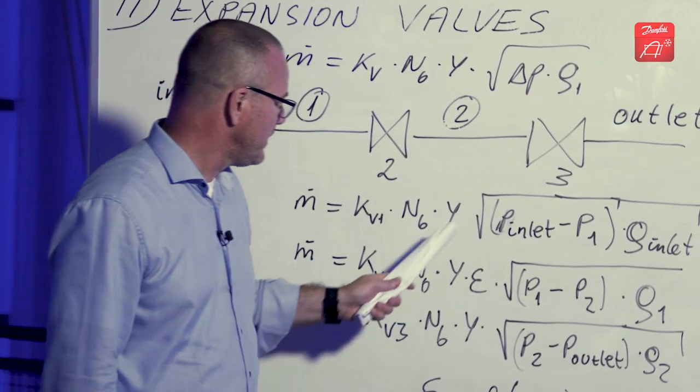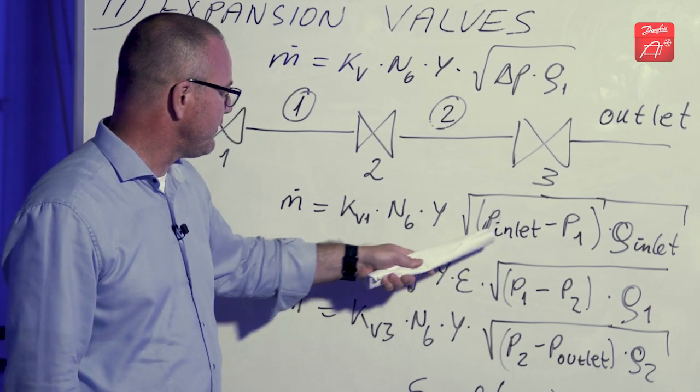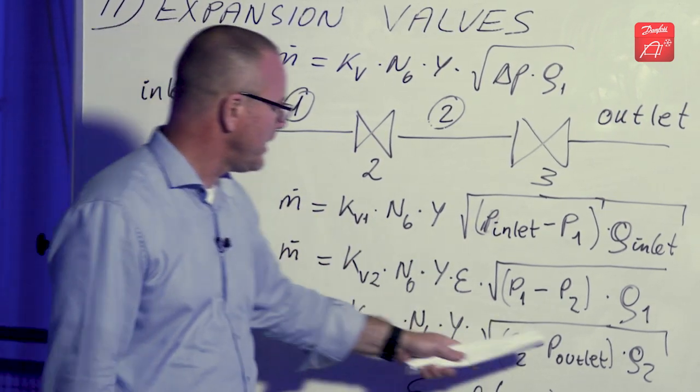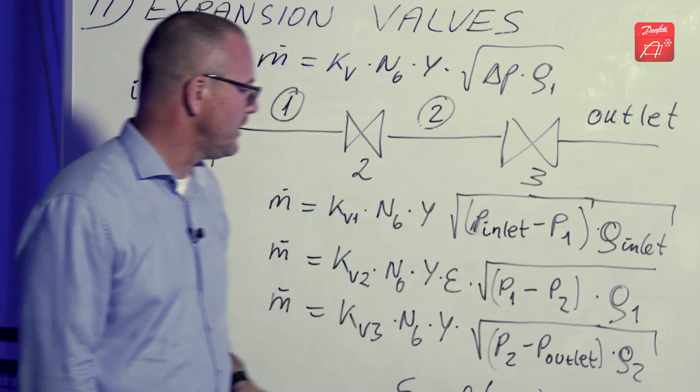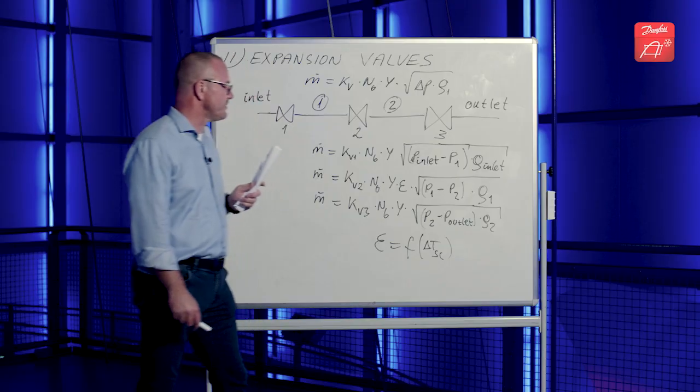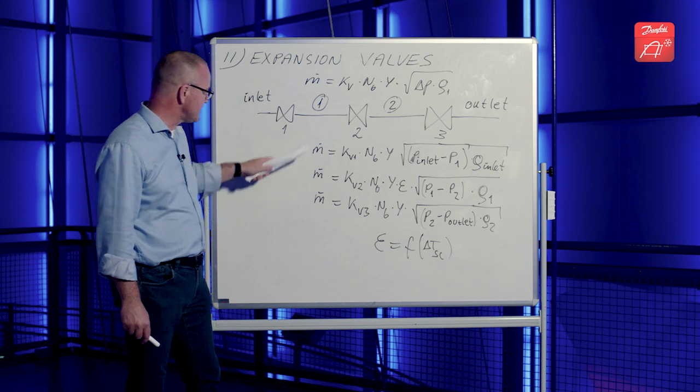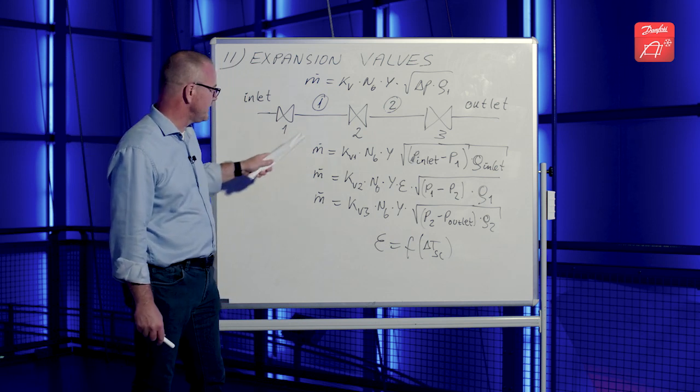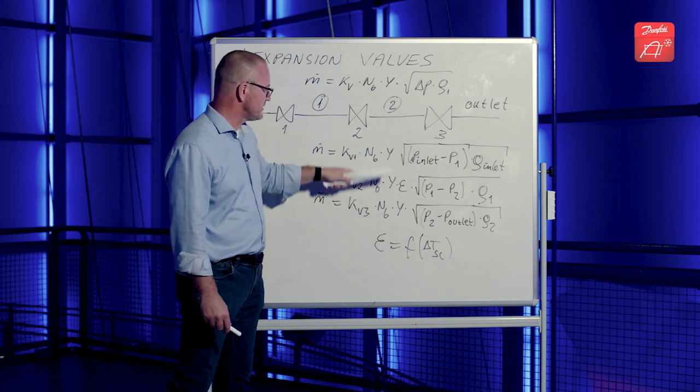We have the epsilon. I'll continue to that later on. And then we have inlet pressure, which is known. Outlet pressure, which is known. And then we have the densities and the pressures in between. So what this makes is actually a closed equation set. It's possible to solve iteratively.